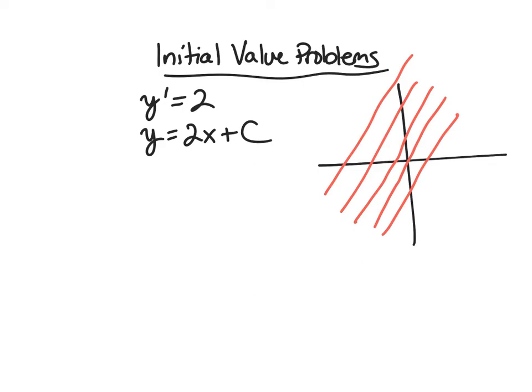So here, if I add an initial value, some point on the graph, I know y(0) is, say, 3, for instance. Then I look over here, and I see, okay, this is y = 2x.